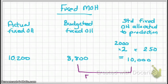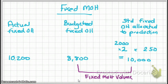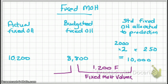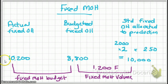The volume variance is calculated first as the difference between allocated and budgeted fixed overhead: $10,000 minus $8,800 equals $1,200. Going from right to left, $10,000 is more than $8,800. Since these are costs, this is a favorable variance. Next, the fixed overhead budget variance compares budgeted overhead with actual fixed overhead — a difference of $1,400. We expected $8,800 but have $10,200, so it is an unfavorable variance.